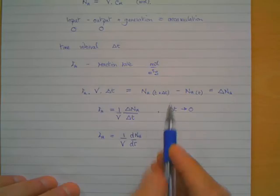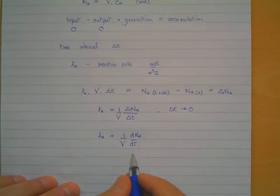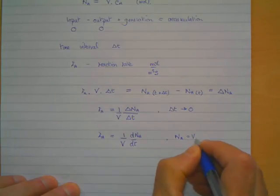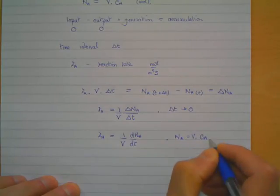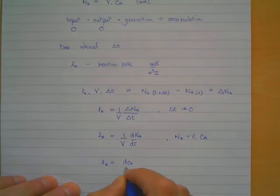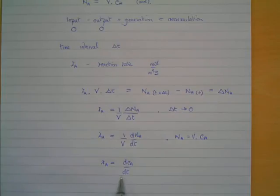And furthermore, we know that earlier on we said that NA equals V times CA. Therefore we can also write this as rA equals dCA by dt, and that's the very simplest form of the equation to describe a batch reactor.